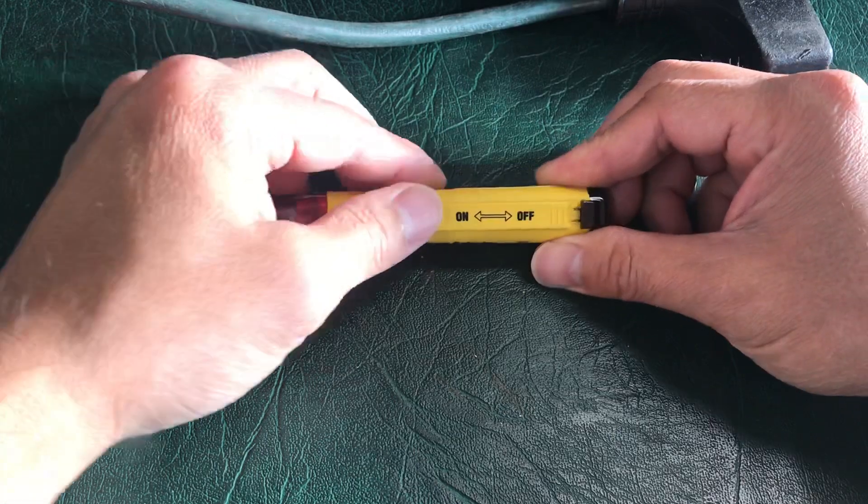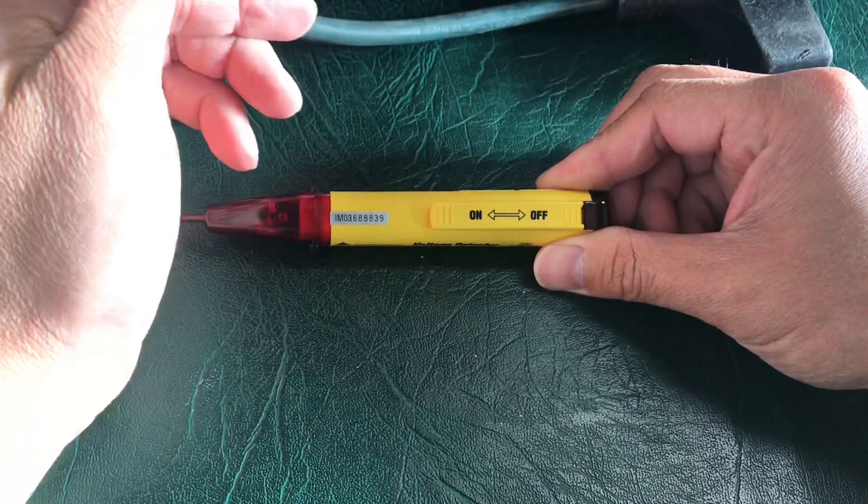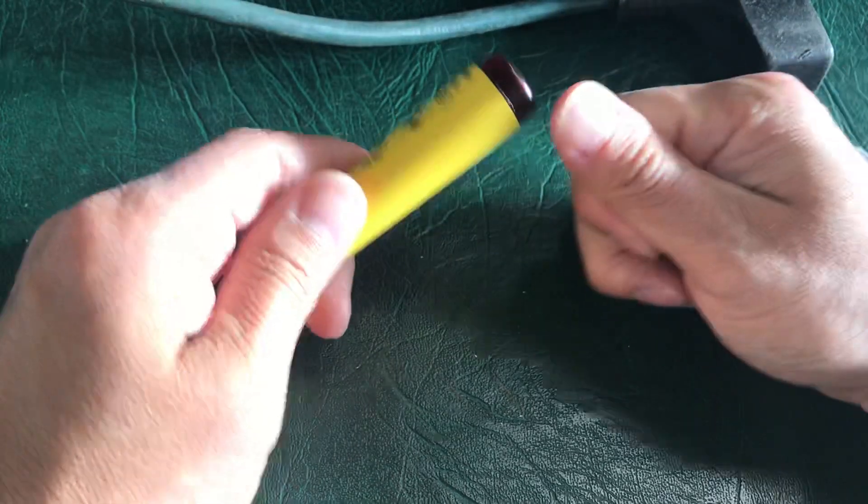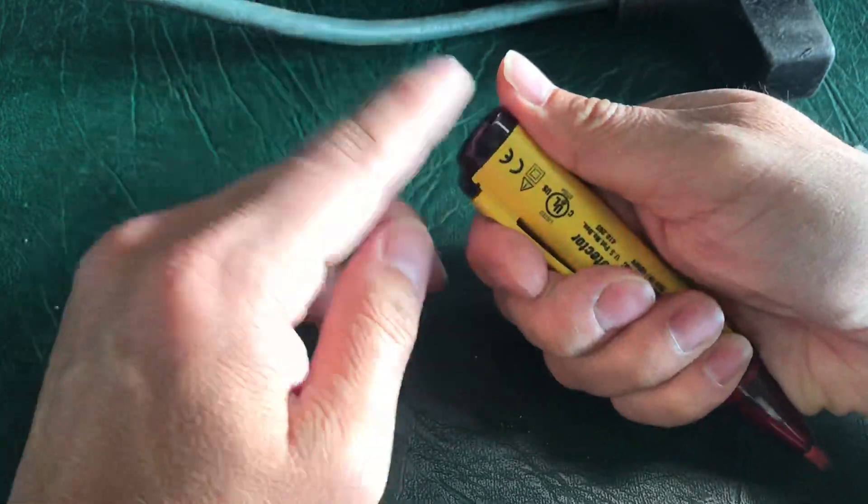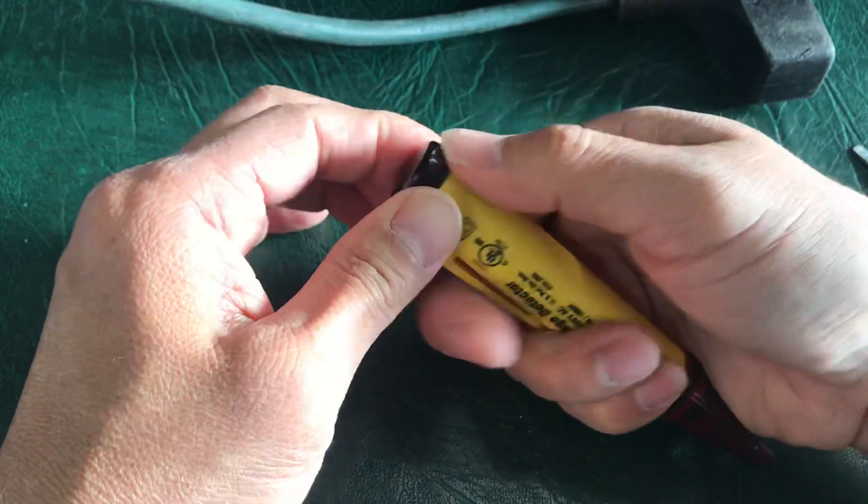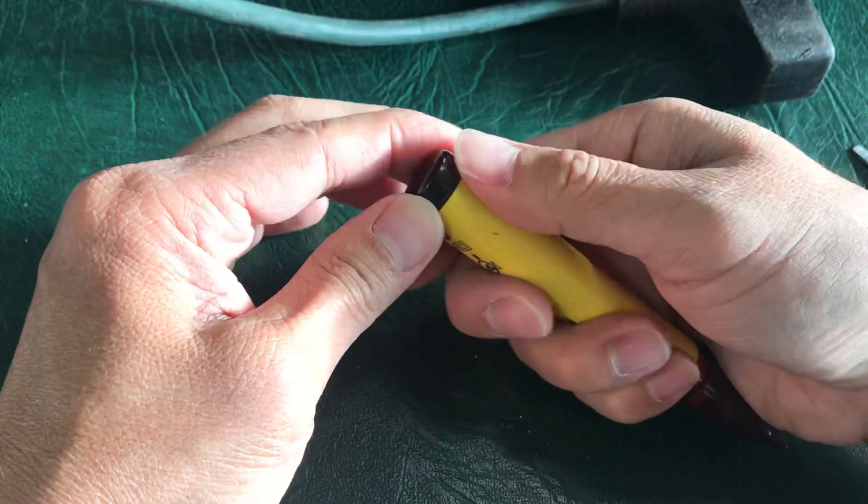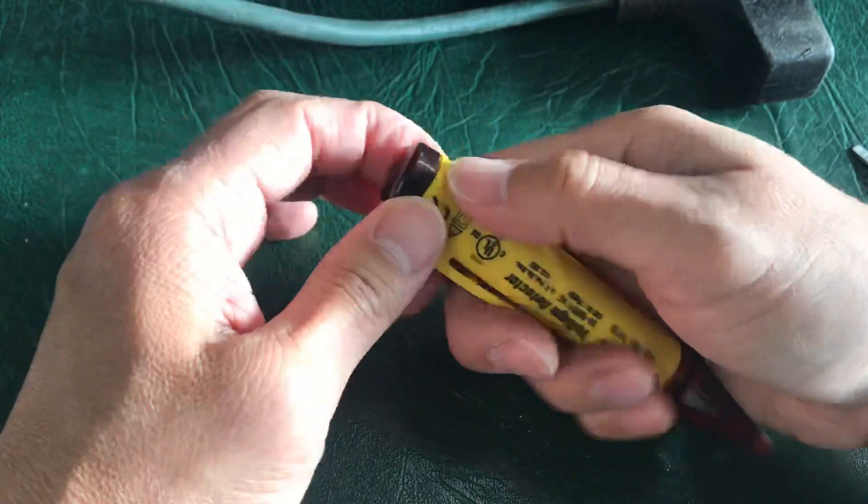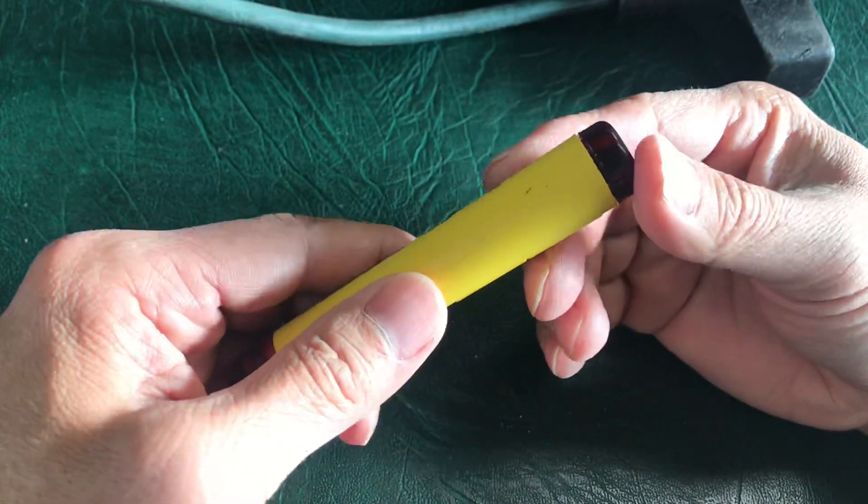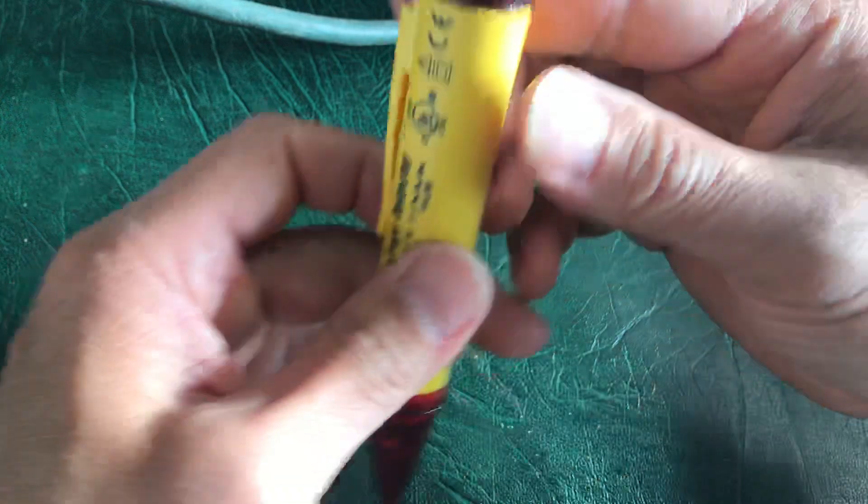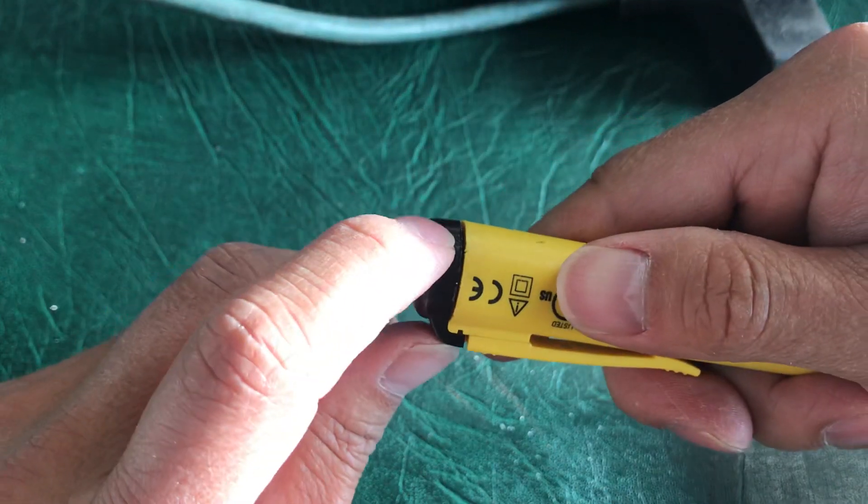First, make sure it's switched off. Use your big thumb to push up this red cap. Be careful because there are two prongs connected to the red cap. Just push it up enough to create a gap between the main casing and the cover.